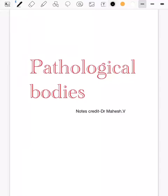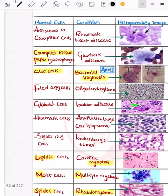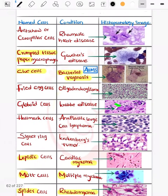Today we will be talking about the pathological bodies that we come across in both pathology and microbiology. Starting with the Aschoff cell, also known as the caterpillar cell, which is seen in rheumatic heart disease. You can see in the photos how it appears.